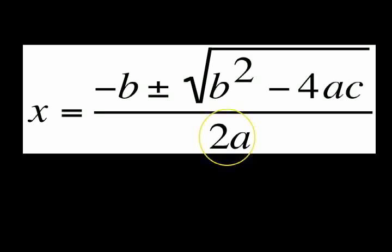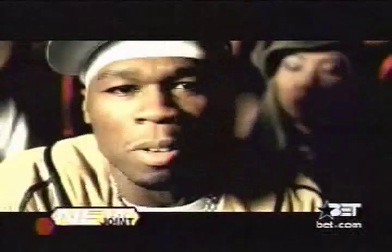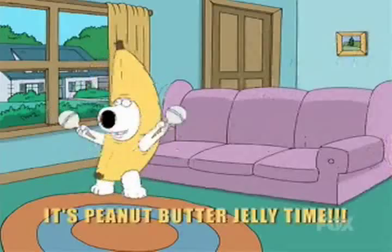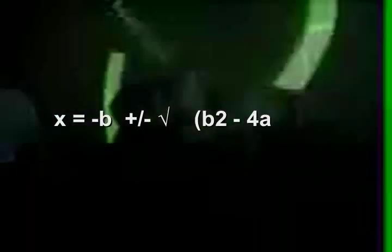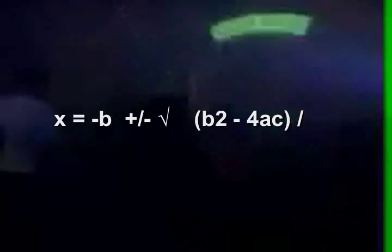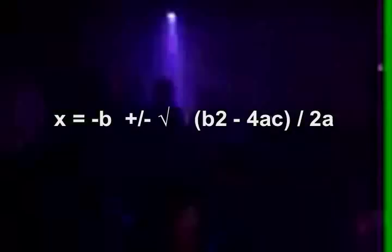Isn't this fun? This is great! That was awesome! Let's try it again! x equals negative b plus or minus square root of b squared minus 4ac divided by 2a.